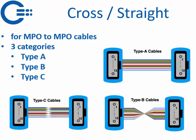Another important thing is the cross or straight configuration. For MPO there are three types of polarity: Type A, Type B, and Type C. Type A is straight — pin 1 is connected to pin 1. Type B is crossed — pin 1 is connected to pin 12. Type C is not really used much — it just swaps pairs 1-2 on each end. For QSFP to QSFP you always have to use Type B.